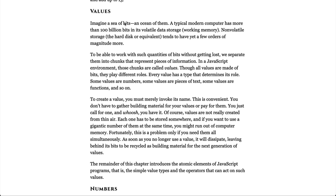Values. Imagine a sea of bits, an ocean of them. A typical modern computer has more than 100 billion bits in its volatile data storage working memory. Non-volatile storage, the hard disk or equivalent, tends to have yet a few orders of magnitude more. To be able to work with such quantities of bits without getting lost, we separate them into chunks that represent pieces of information. In a JavaScript environment, those chunks are called values. Though all values are made of bits, they play different roles. Every value has a type that determines its role. Some values are numbers, some values are pieces of text, some values are functions, and so on.